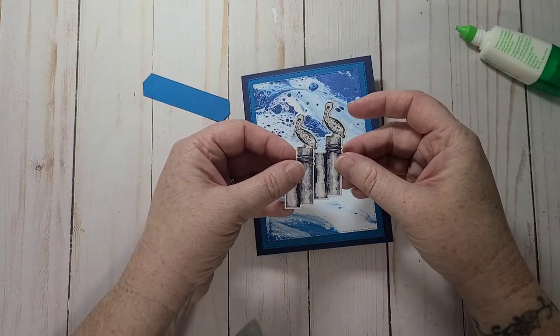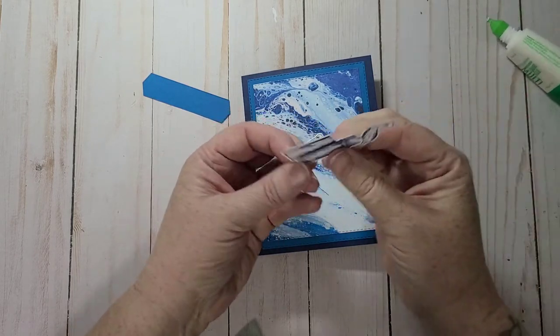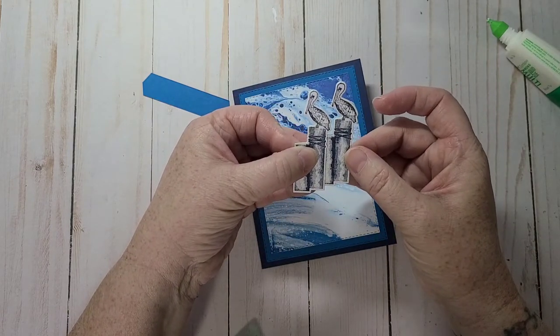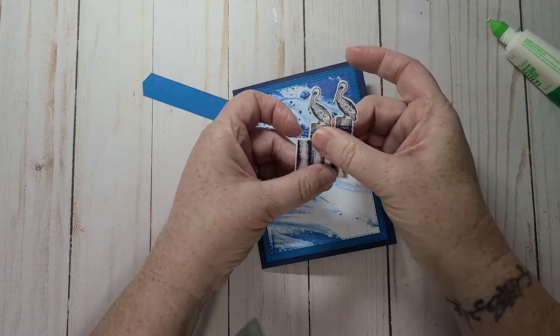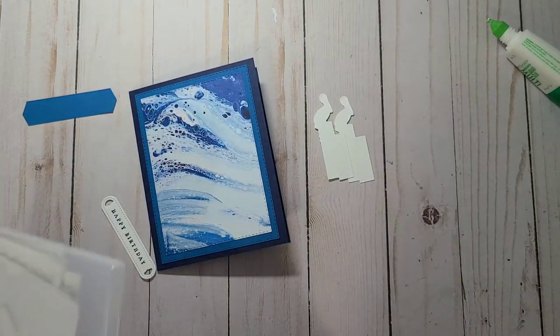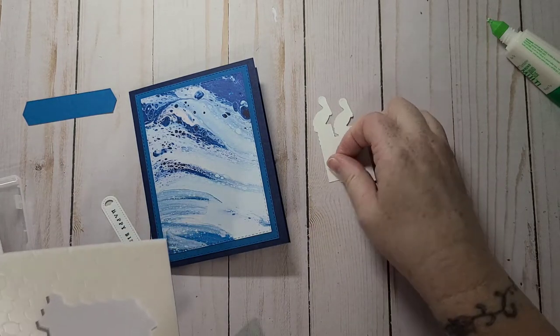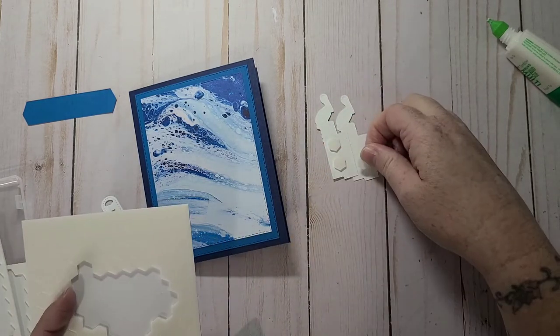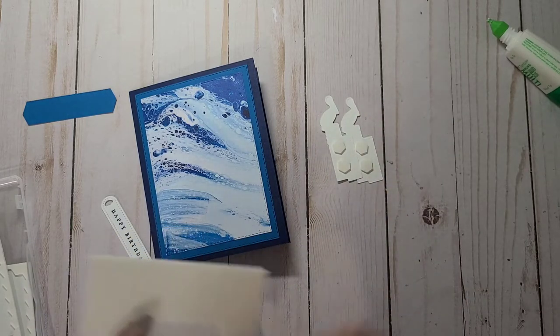So I'm going to put a little bit of glue on this edge of my pelican. And I'm going to overlap these guys and have one on top of the other and just hold that in place for a minute or two. And then I'm going to add dimensionals. Now this really is a quick and easy card you guys, because there's no coloring in any images. It's just stamp and die cut out really.